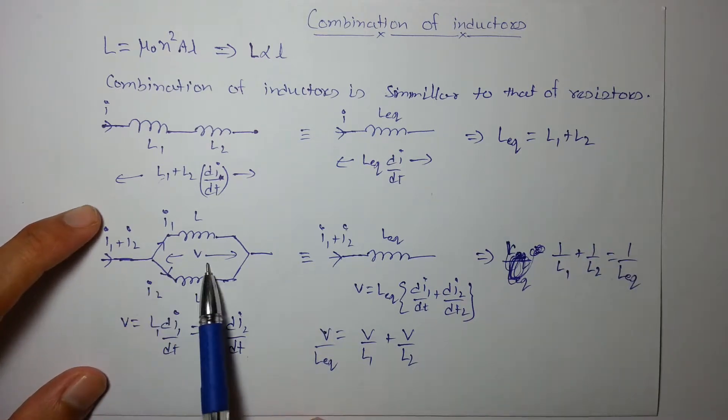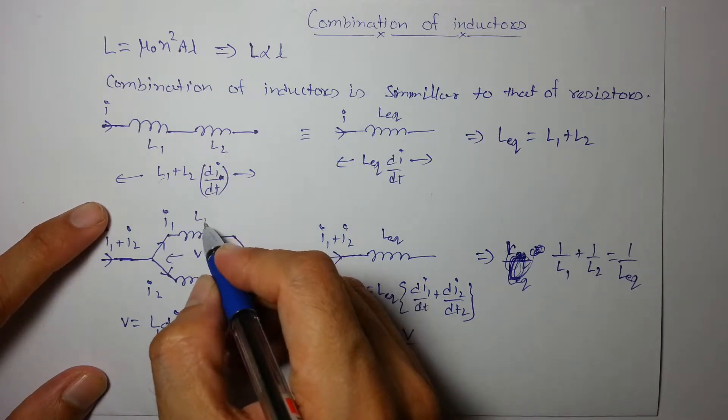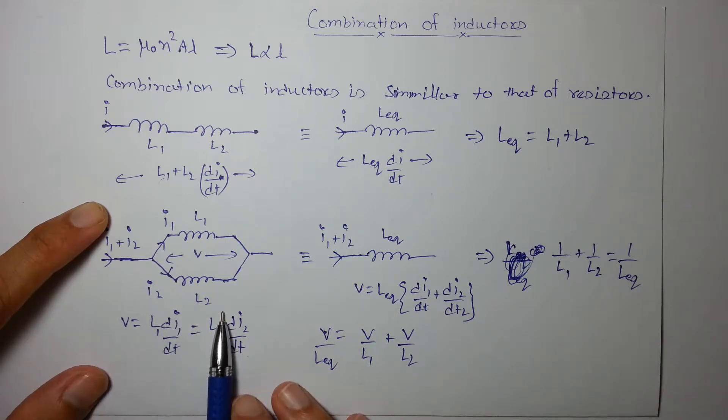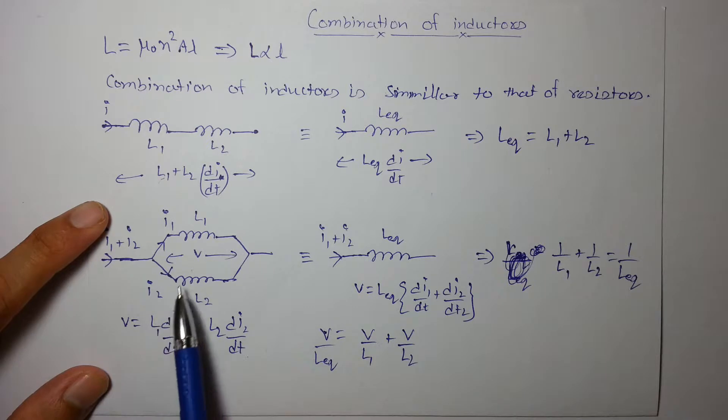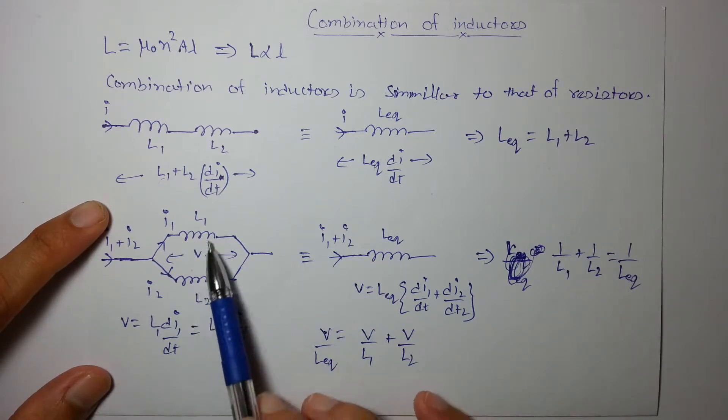Moving on to the parallel combination, let's say current I₁ moves to inductor L₁ and I₂ moves to inductor L₂. We can say as they are in parallel, both will have same voltage across them, that will be L₁ dI₁/dt and L₂ dI₂/dt.